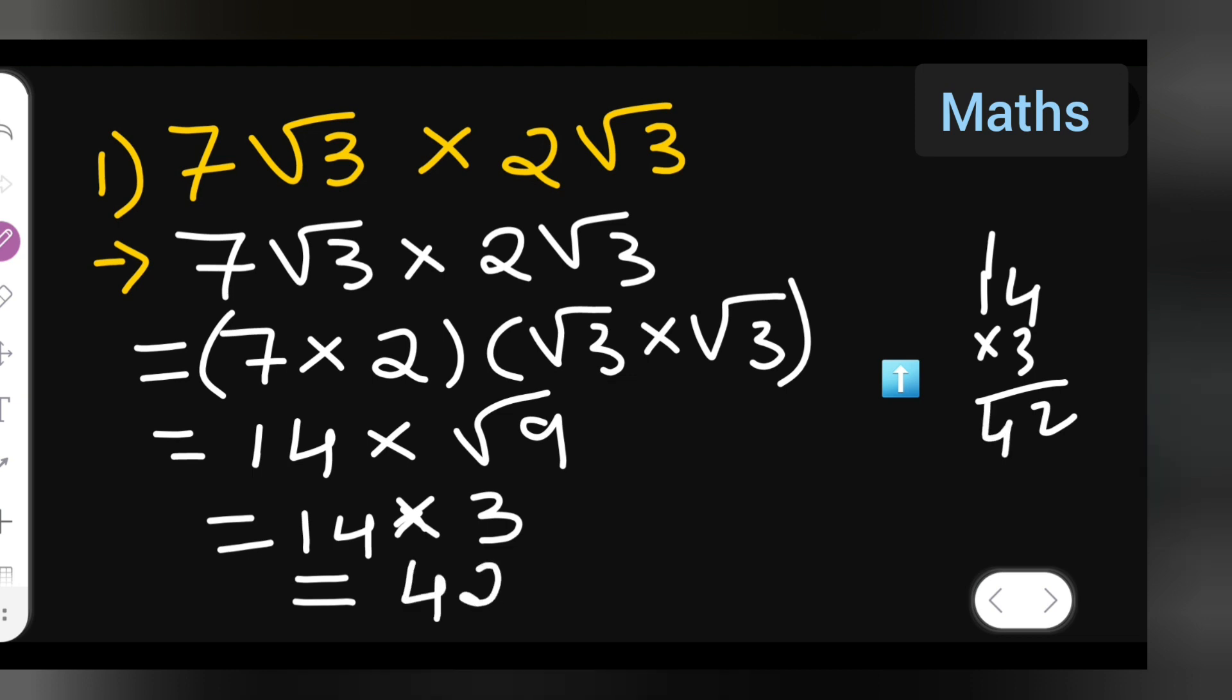So I hope you all have understood how to multiply 7 root 3 multiplied by 2 into root 3. Thanks for watching.